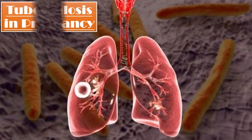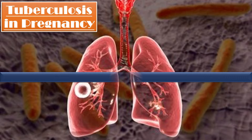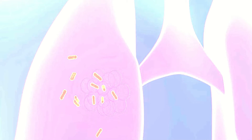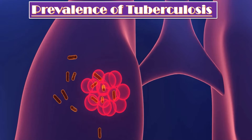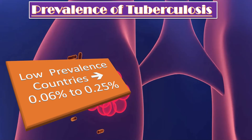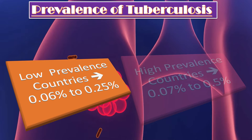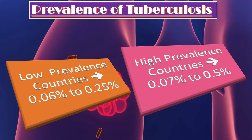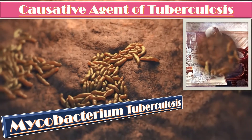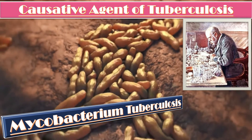This video is about the DDOG article on tuberculosis in pregnancy, November 2022. The prevalence of active tuberculosis among pregnant women ranges from 0.06% to 0.25% in low prevalence countries, and between 0.07% to 0.5% in high prevalence countries. Mycobacterium tuberculosis, discovered by Robert Koch in 1882, is the causative organism.